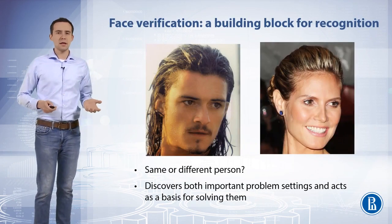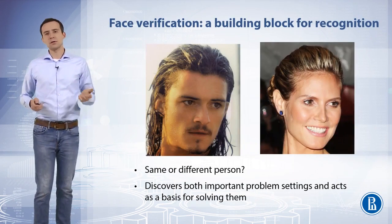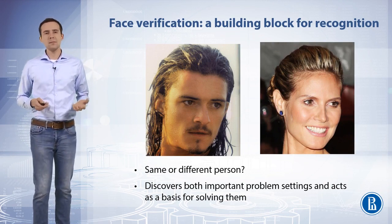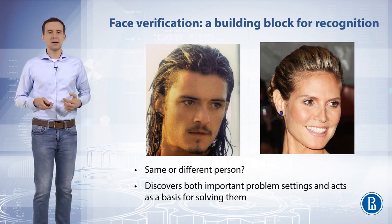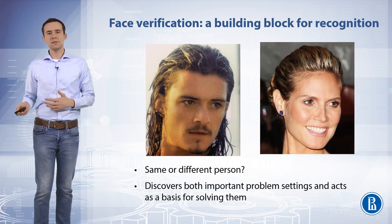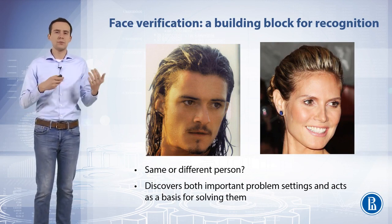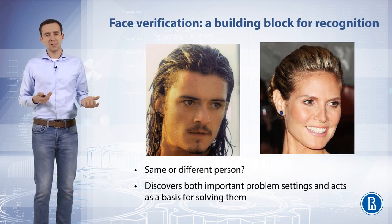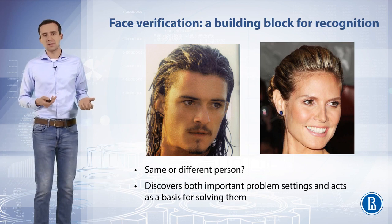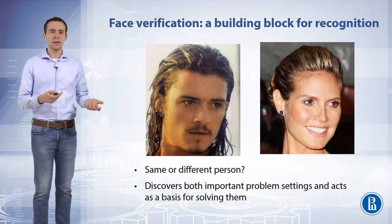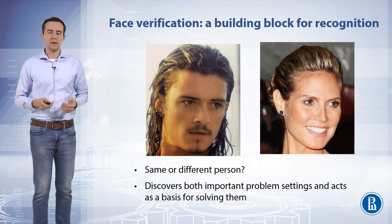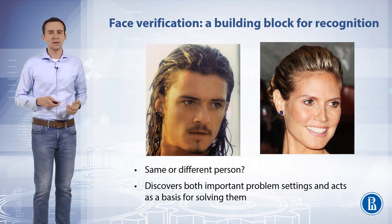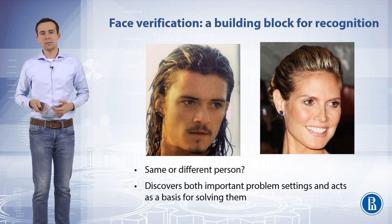In a verification task, two facial images are presented to a system. The system has to decide if the images belong to the same person or to two different persons. The basic question asked in verification is: is this person who he claims to be? Verification is also called authentication or one-to-one matching.